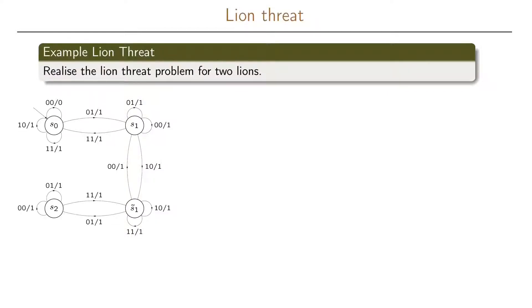Before we can make the truth table, we need to make a state assignment. We have four different states — S0, S1, S1 tilde, and S2 — and we need to represent these states with two bits, which we will call Q1 and Q2. So S0 is assigned 00, S1 is assigned 01, S1 tilde is assigned 11, and S2 is assigned 10.